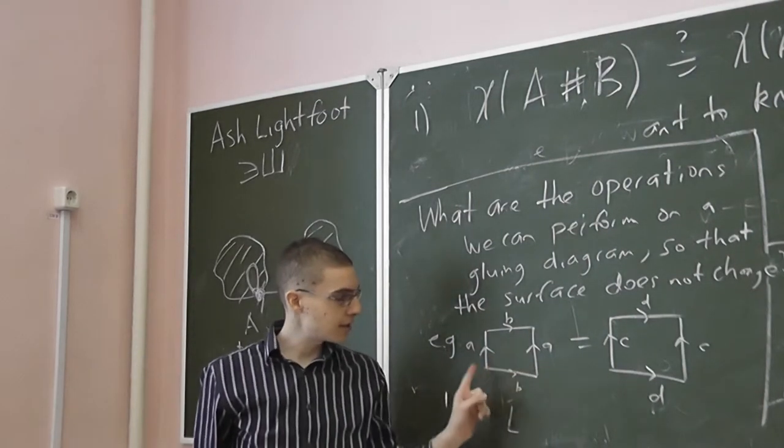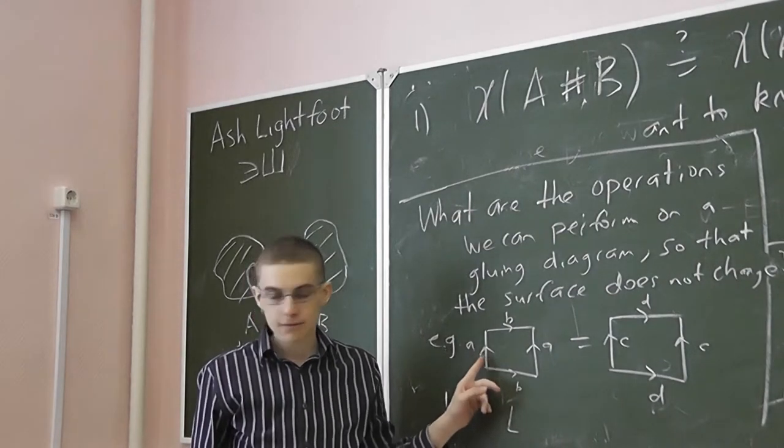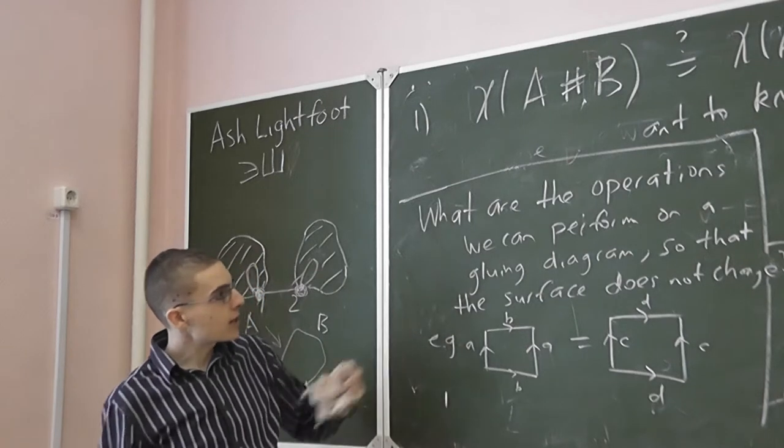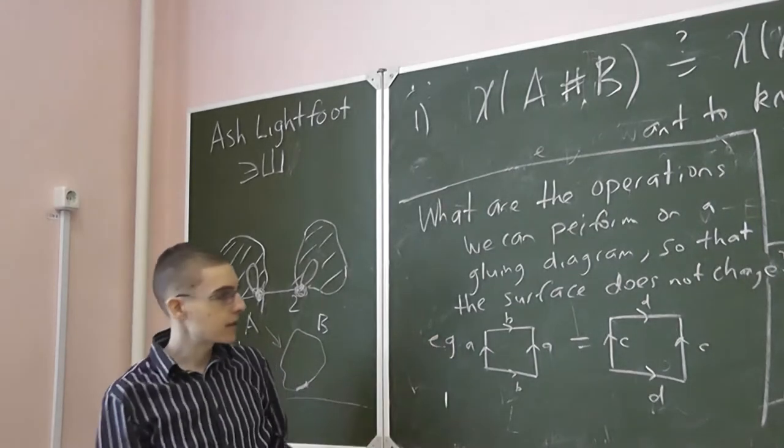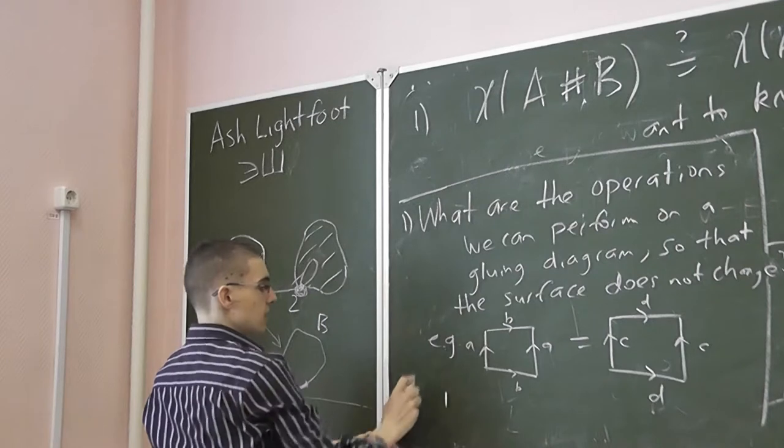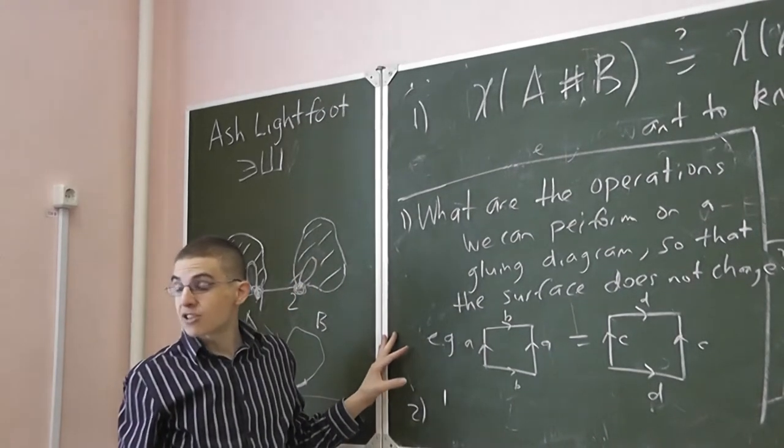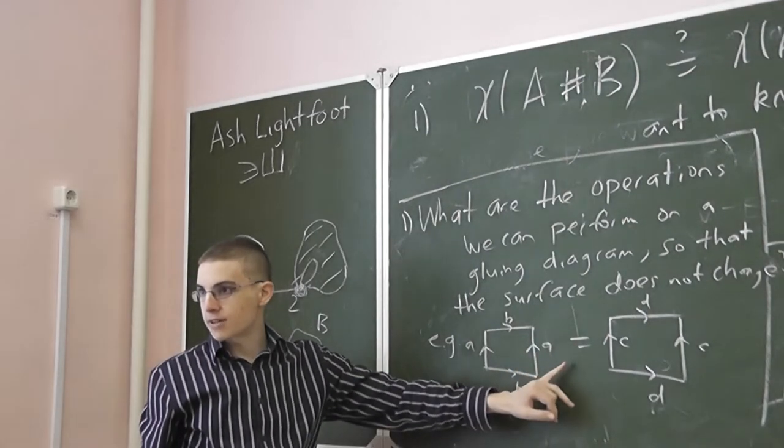One example is we take a gluing diagram and we just replace the labels. So that's an obvious one. So I'd like you to think about what are all the possible ways that we can change a diagram without changing the surface. And two, we need to check that the Euler characteristic doesn't change when we do this, when we make this change in our diagram.